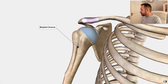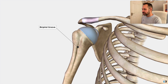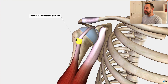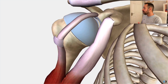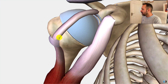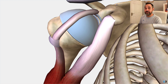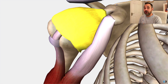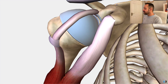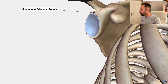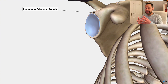The tendon runs through the bicipital groove, which we can see is this indentation in the proximal humerus, and it's held in place by a small ligament called the transverse humeral ligament to make sure it stays within that groove. The tendon then runs over the superior aspect of the proximal humerus and there's actually an intra-articular component, meaning it runs inside the capsule of the glenohumeral joint. It then inserts into the supraglenoid tubercle of the scapula — a small tubercle superior to the glenoid.